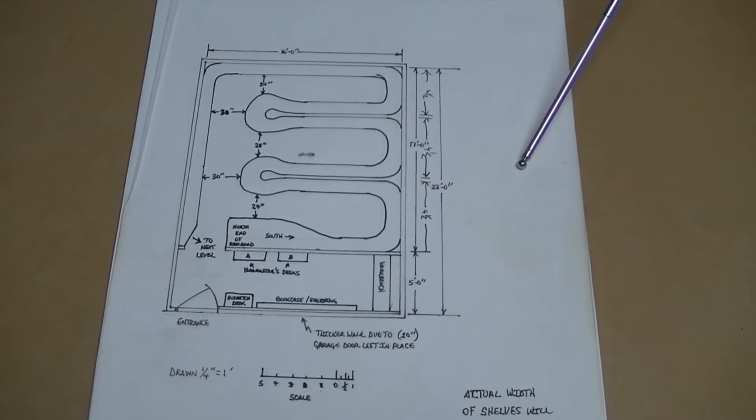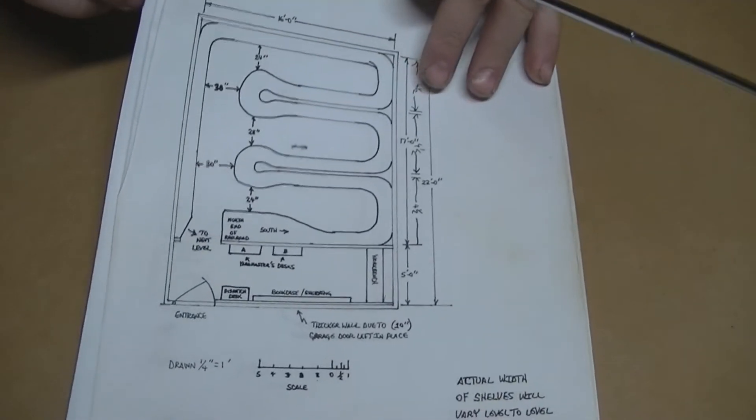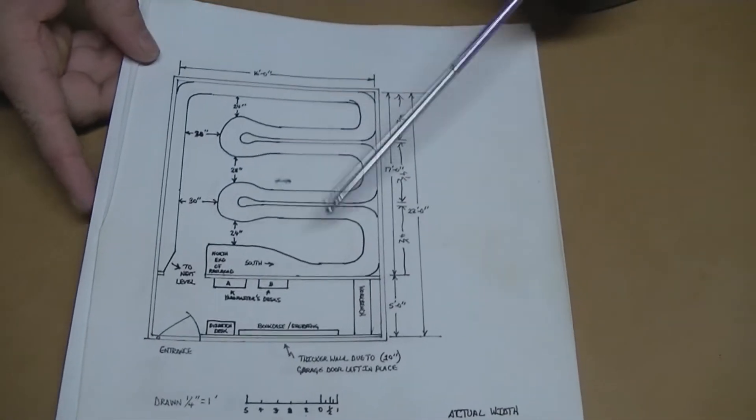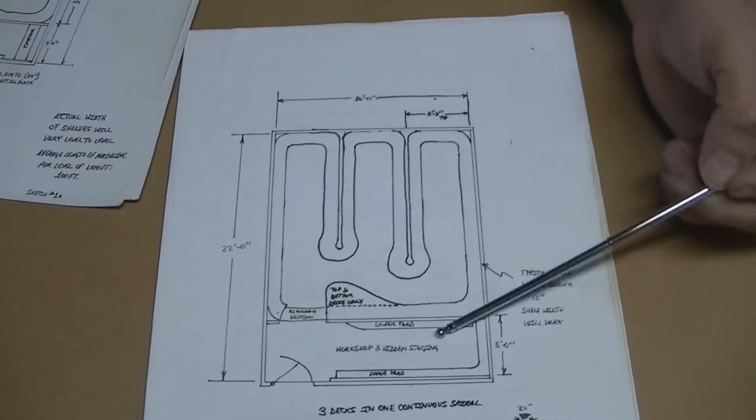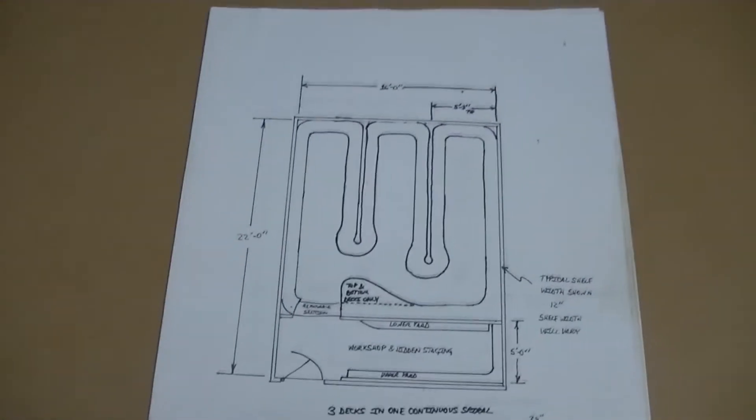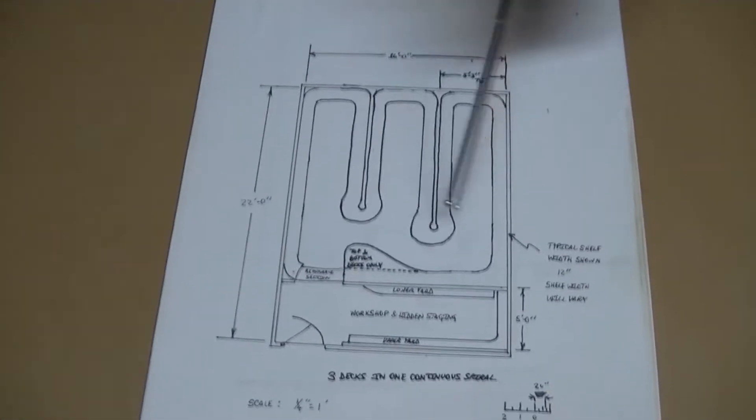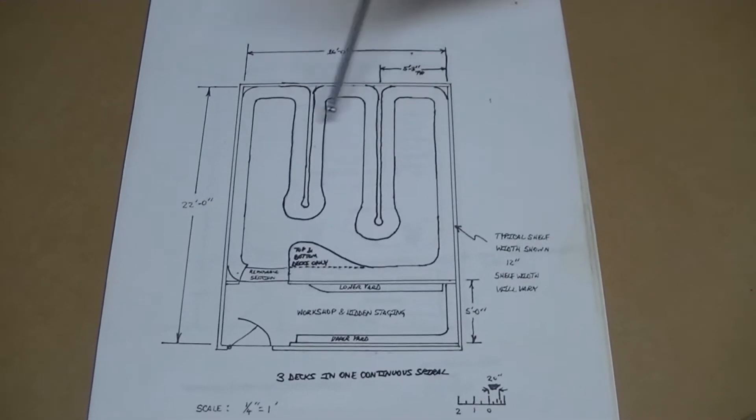More tweaking was done and then we decided to change the peninsulas from going across the room to parallel with the side walls of the room to try to gain more of a length of a main line. But we still had the same problem. The aisles were too narrow.